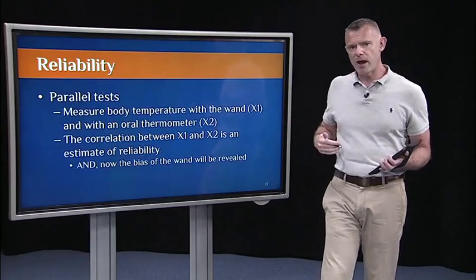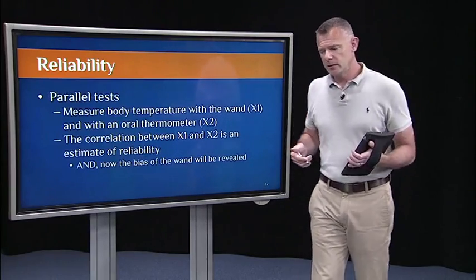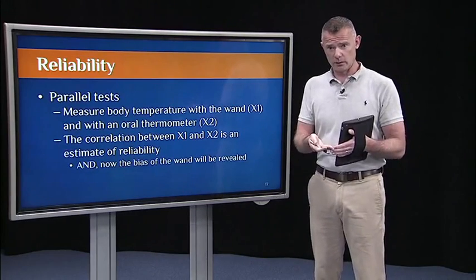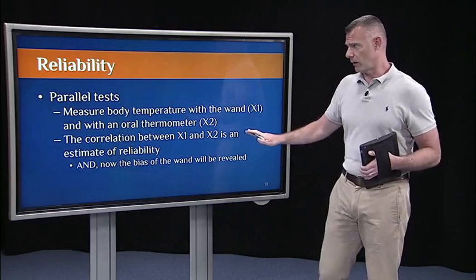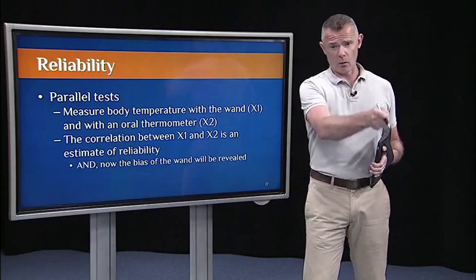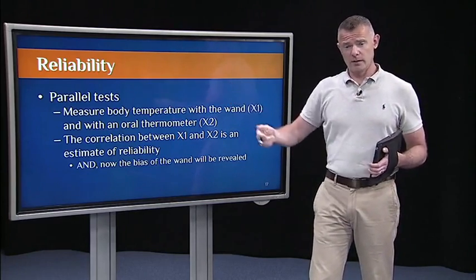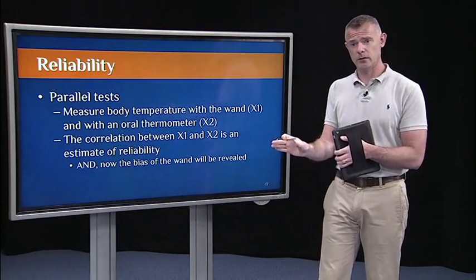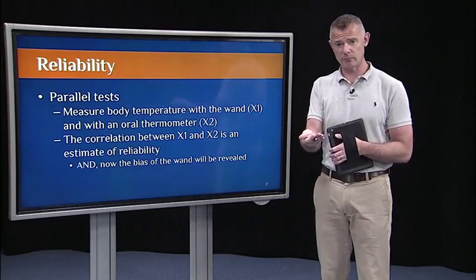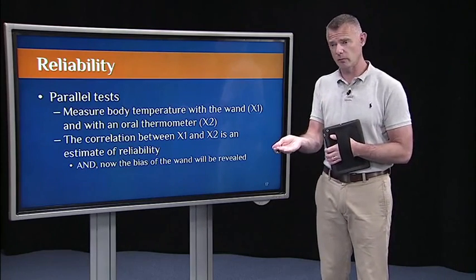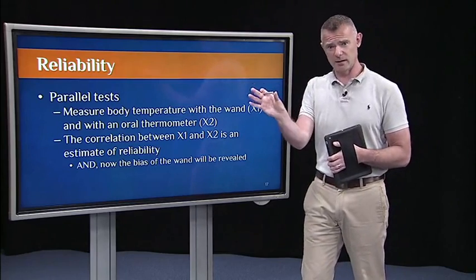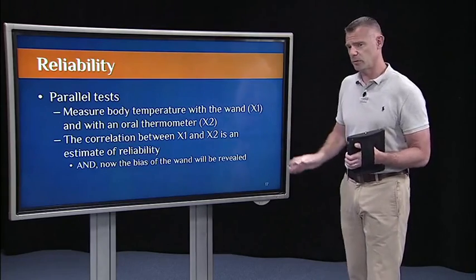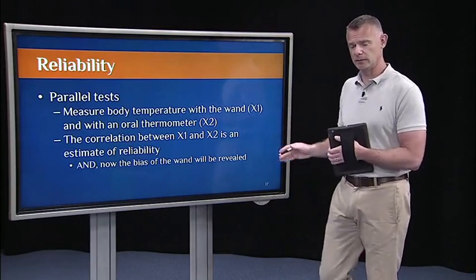So another method is the parallel test method. Let's take two different instruments and see how those are correlated. The idea of parallel tests is like doing the oral thermometer and the infrared thermometer, seeing how they're correlated, but also comparing their distributions. This would give us a reliability estimate. Again, the correlation would be the reliability estimate. But comparing the means and the histograms, that would also reveal a systematic bias. So that's the difference between the test-retest and the parallel tests.